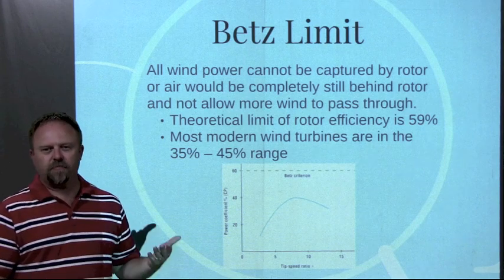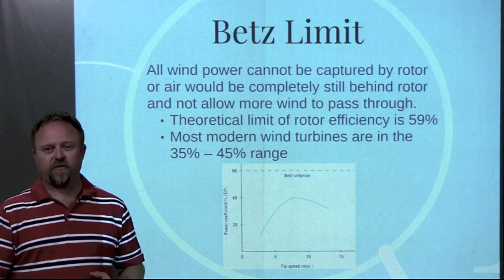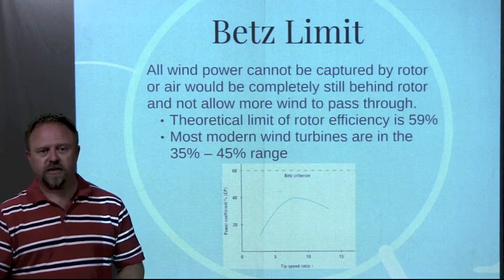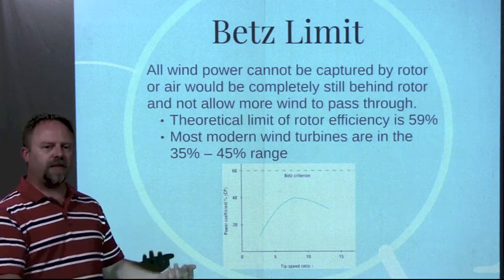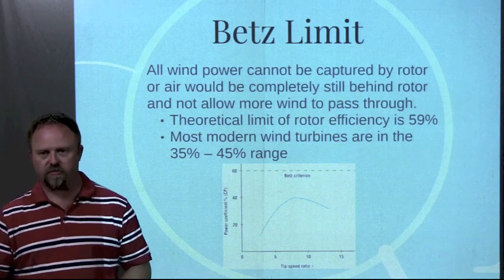Most wind turbines don't even reach that point. They're usually in the, maybe for large scale wind turbines, in the 35 to 45% range of efficiency. We'll be able to look at how much power is in the wind, multiply that by a percentage, that's how much we can capture with our wind turbine.